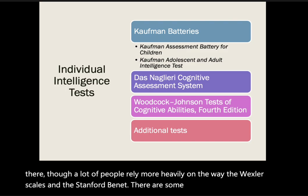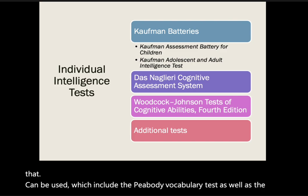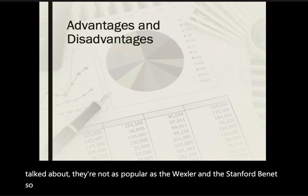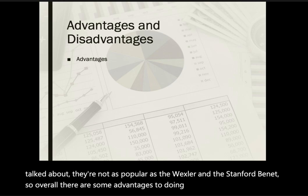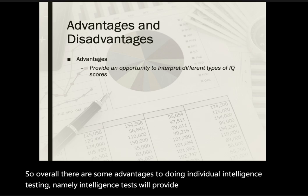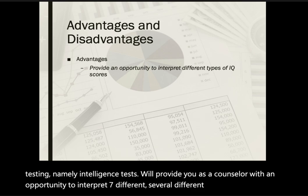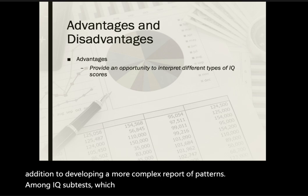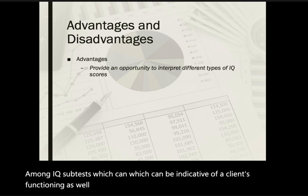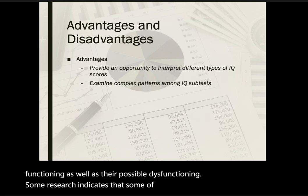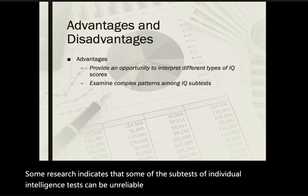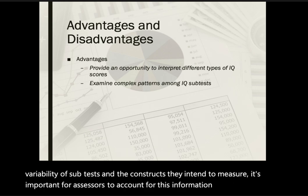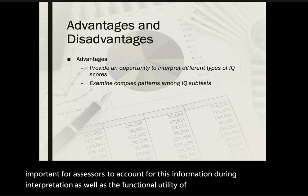There are some additional assessments that can be used, including the Peabody Vocabulary Test and the Wide Range Intelligence Test, though similar to others mentioned, they are not as popular as the Wechsler scales and Stanford-Binet. Overall, there are advantages to individual intelligence testing — namely, intelligence tests provide counselors with an opportunity to interpret several different types of IQ scores, in addition to developing a more complex report of patterns among IQ subtests, which can be indicative of a client's functioning as well as possible dysfunctioning. Some research indicates that some subtests of individual intelligence tests can be unreliable, so assessors should account for this during interpretation.